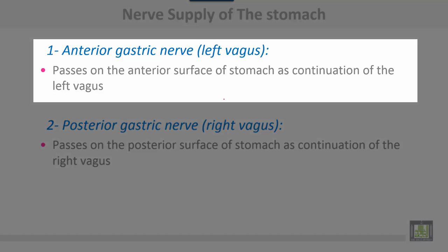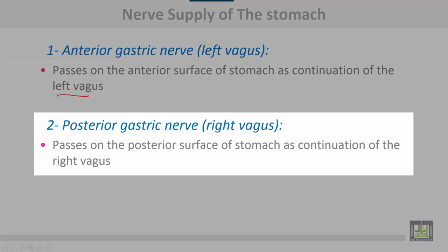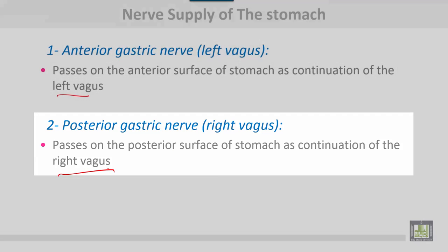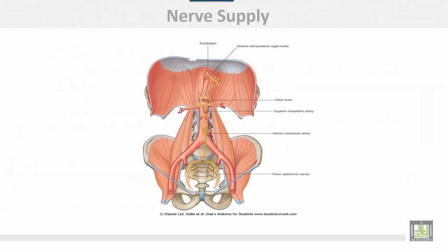Nerve supply of the stomach: the anterogastric nerve, or left vagus, passes on the anterior surface of the stomach as a continuation of the left vagus. The posterogastric nerve passes on the posterior surface of the stomach as a continuation of the right vagus. Autonomic plexuses — the celiac plexus — arise around the different arteries from the aorta.